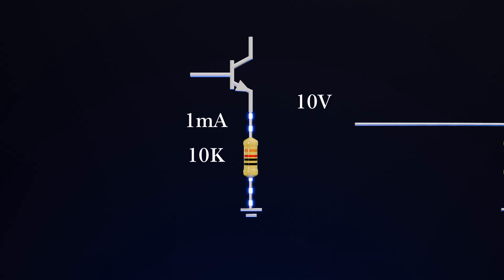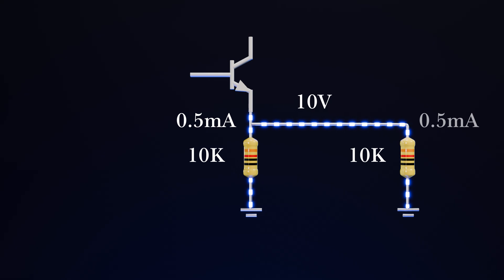Now let's add a load to this output. The resistance of the load is 10,000 ohms. Now we will not have 1 milliamp current through this resistor. Instead, 0.5 milliamps of current will flow through this resistor, and 0.5 milliamps of current will flow through the load resistor. And we will have 5 volts here. But we want it to have 10 volts.